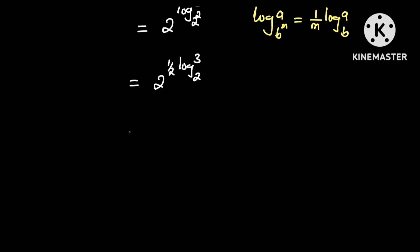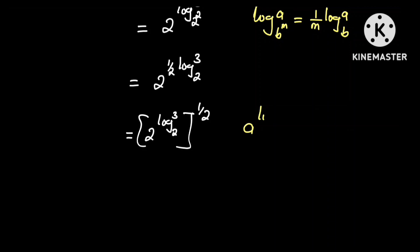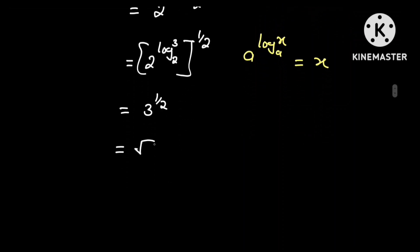And this can also be written in the form 2 raised to the power of log of 3 to the base 2, all raised to the power one half. Recall that a raised to the power of log of x to the base a is just equal to x. So 2 raised to the power of log of 3 to the base 2 is just equal to 3. And so this is equal to 3 raised to the power one half, which is equal to the square root of 3.